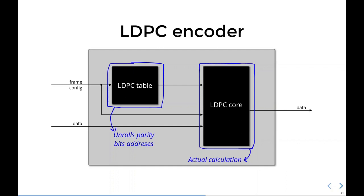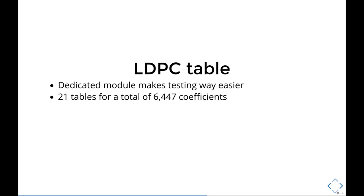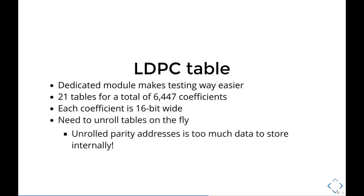Let's have a look at the LDPC table first. First of all, a dedicated module makes testing way simpler and faster. Next, if we go through the DVB spec appendixes, we'll find 21 tables, and each one has a variable number of coefficients, but in total that is almost 6,500 coefficients, and we need 16 bits to represent them. As we've seen previously, we need to unroll the tables, and we need to do that on the fly, because if we stored the unrolled values, it would be just way too much data to store internally.